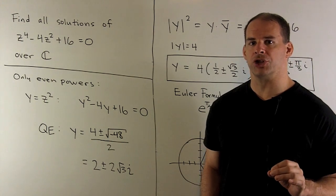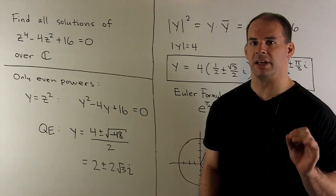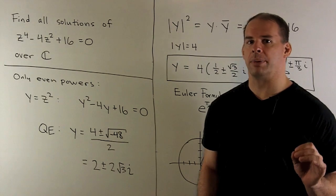Find all solutions to the equation z to the fourth minus 4z squared plus 16 equals zero, over the complex numbers.